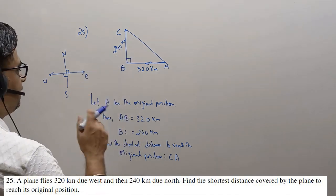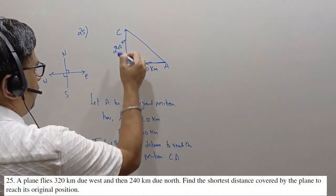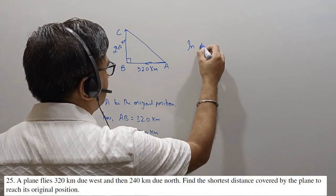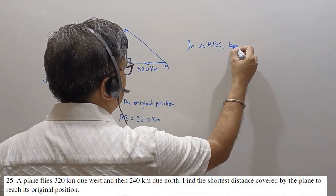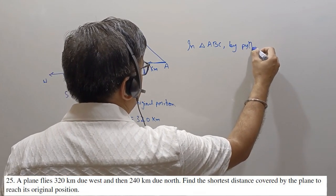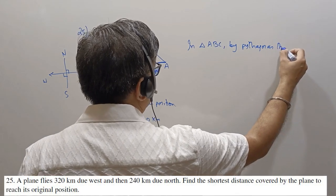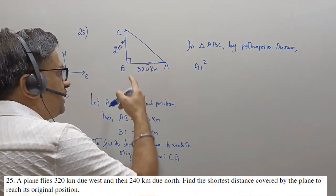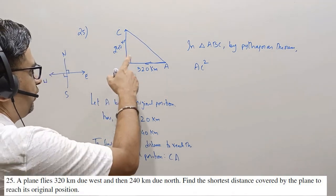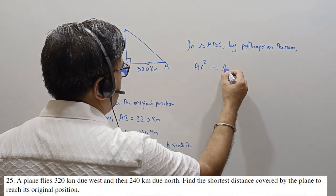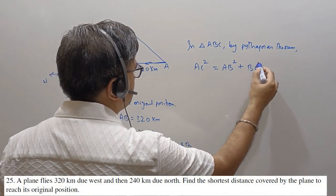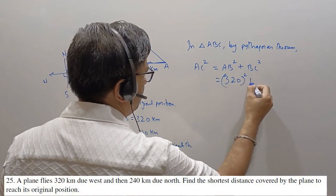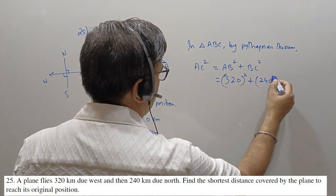So when one goes from west to north, this angle would be 90 degrees. We will apply Pythagoras theorem. In triangle ABC, by Pythagoras theorem, AC squared equals AB squared plus BC squared. AB we know is 320 squared plus BC which is 240 squared. 320 squared is 102400 and 240 squared is 57600.